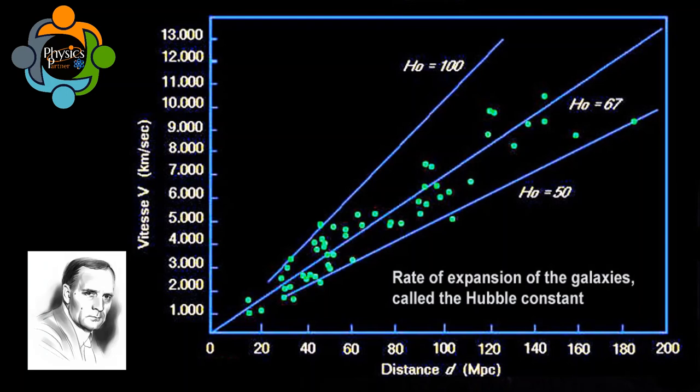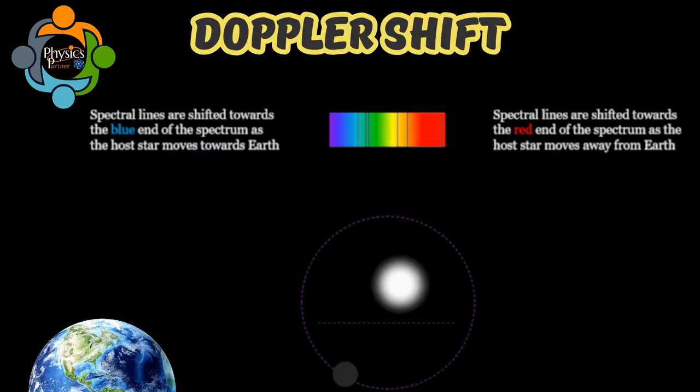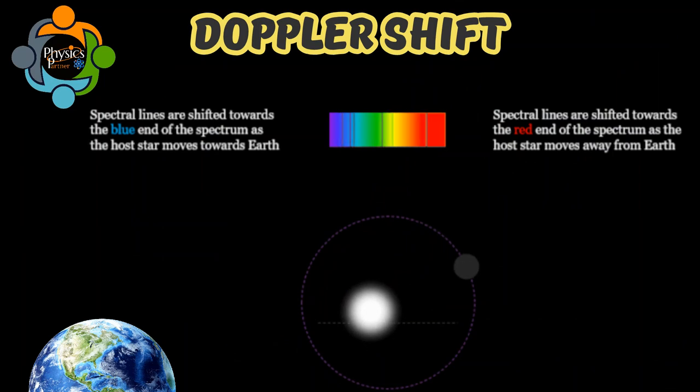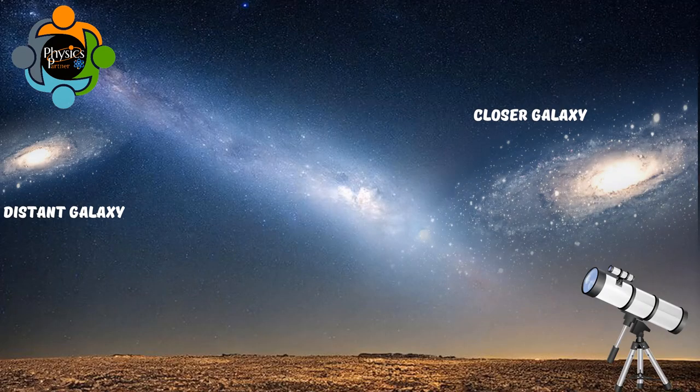In 1929, the astronomer Edwin Hubble showed that the universe was expanding. He did this by observing that the absorption line spectra produced from the light of distant galaxies was shifted towards the red end of the spectrum. This Doppler shift in the wavelength of light is evidence that distant galaxies are moving away from Earth. Hubble also observed that light from more distant galaxies was shifted further towards the red end of the spectrum compared to closer galaxies.